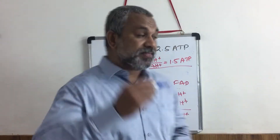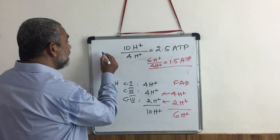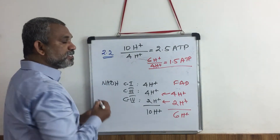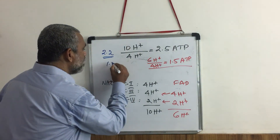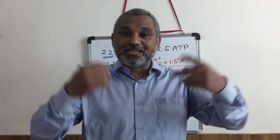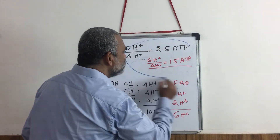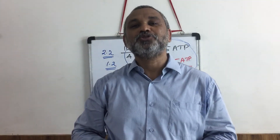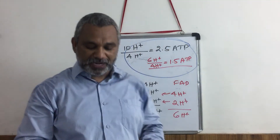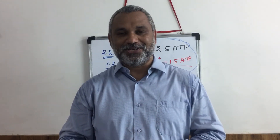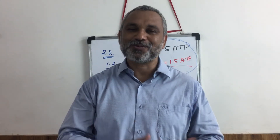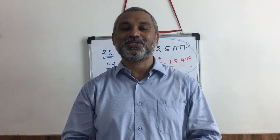Now, the latest research is showing a slight variation in this number: an NADH will give 2.2 ATPs, and FADH2 will give 1.2 ATP molecules. Still, there is time to implement that. At the moment, stick to this — NADH will give 2.5 ATP and FADH2 will give 1.5 ATP molecules. This is known as P by O ratio. I am sure you have enjoyed going through these sessions — keep subscribing to this channel. Thank you very much.